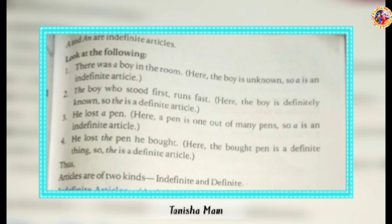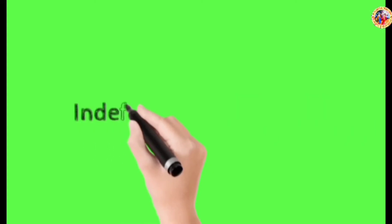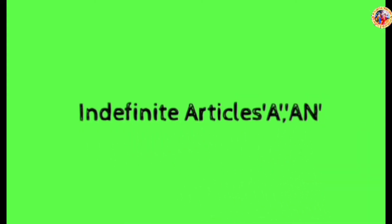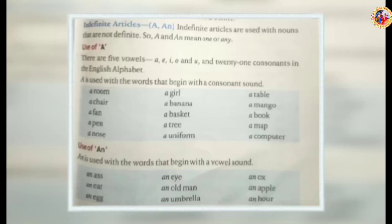Thus, articles are of two kinds: indefinite and definite. Indefinite articles A and AN are used with nouns that are not specific. A and AN mean one or any.